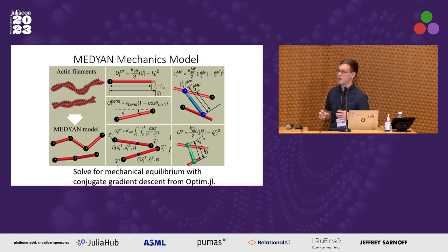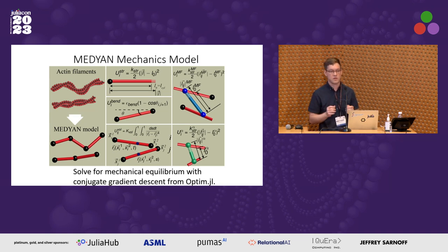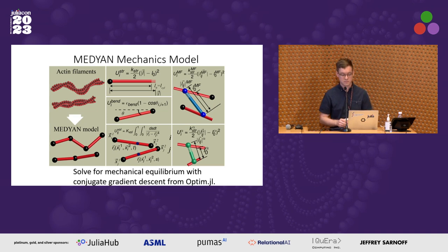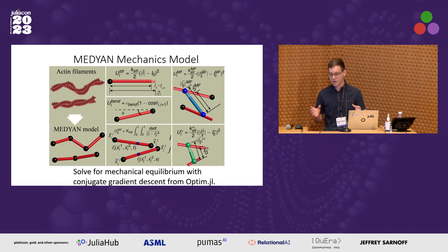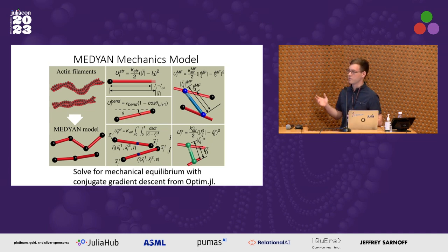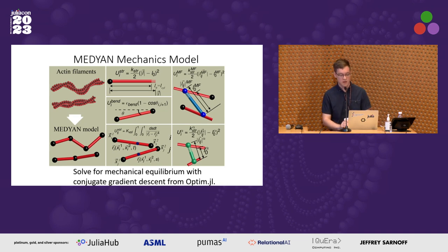We have a large variety of different force terms. At mechanical equilibrium, everything has a net force of zero. We solve this problem using conjugate gradient descent — currently using optim.jl.